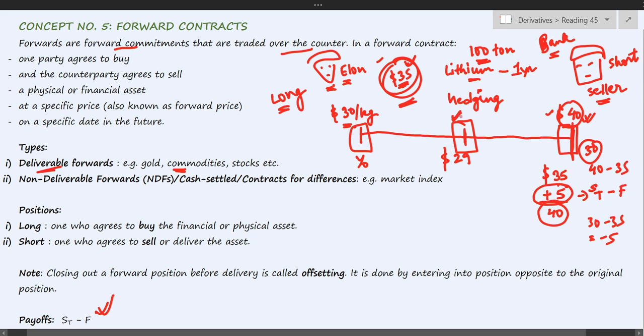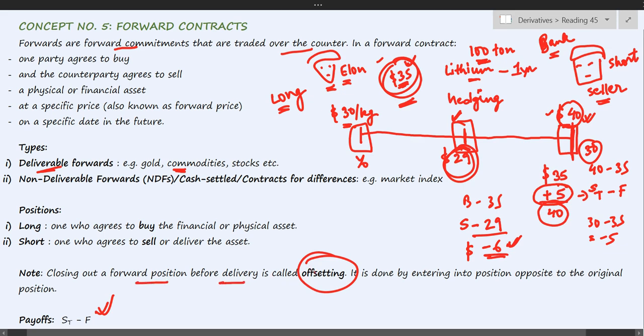How it can be done? By simply making the settlement as on that date. Since Elon is losing in this case, right - he has a right to buy for $35 and the price as on this date is $29 - so in order to cancel this contract now, he will have to take an opposite position. The opposite position will be sell, and the current market price is $29, so he will have to sell it for $29 and the differential, that is $6, will be his loss. So he can pay to the bank and cancel this contract as on this particular date. This is called offsetting, that is closing out the forward position before delivery, before the maturity.